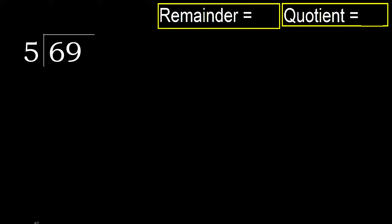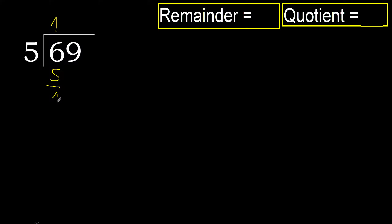69 divided by 5. 6 is not less — therefore with 6, 5 multiplied by which number is nearest to 6 but not greater? 5 multiplied by 2 is 10, 10 is greater. Multiplied by 1 is 5, is not greater. 6 minus 5 is 1.